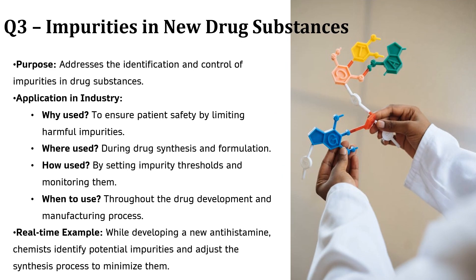Next is ICH Q3, Impurities in Drug Substance and Drug Products. This guideline is all about identifying and controlling impurities in medicines to ensure patient safety. Even tiny amounts of impurities can sometimes be toxic or affect how the medicine works. Pharma companies must identify, monitor and limit these impurities. Companies set specific impurity thresholds and test batches to ensure they stay within safe limits. For example, imagine a company developing a new antihistamine for allergies. During testing, they discover small amounts of an unwanted by-product forming in the drug. They adjust the synthesis process to remove or minimize that impurity, ensuring the final medicine is always pure and safe.